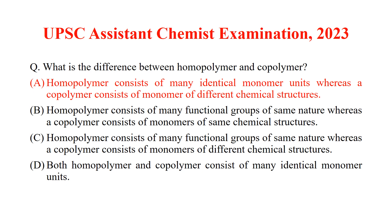So let's continue with questions from polymers. What is the difference between a homopolymer and a copolymer? It is a very easy and direct question. A homopolymer consists of identical monomers, whereas a copolymer consists of two or more monomers. So the answer is option A.